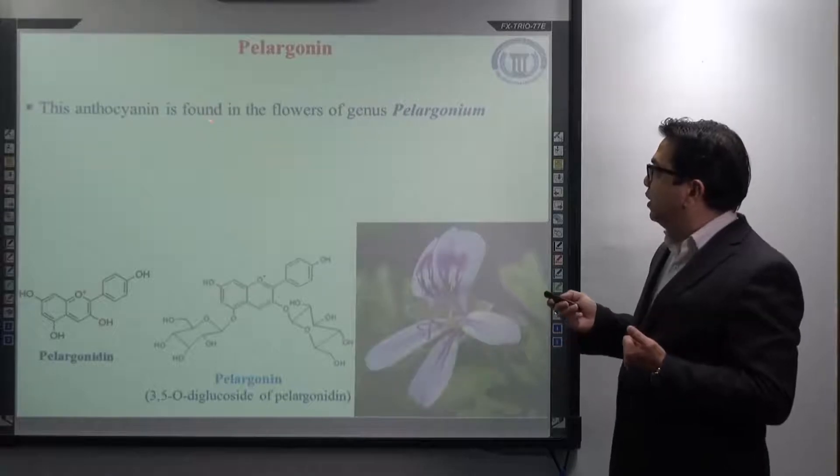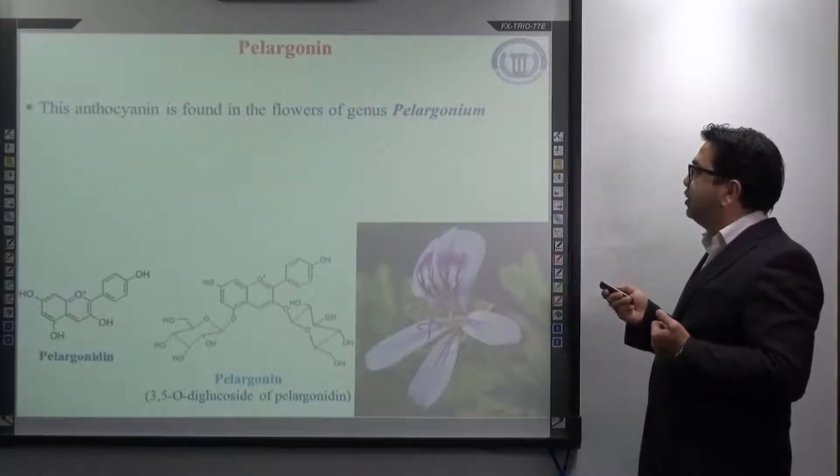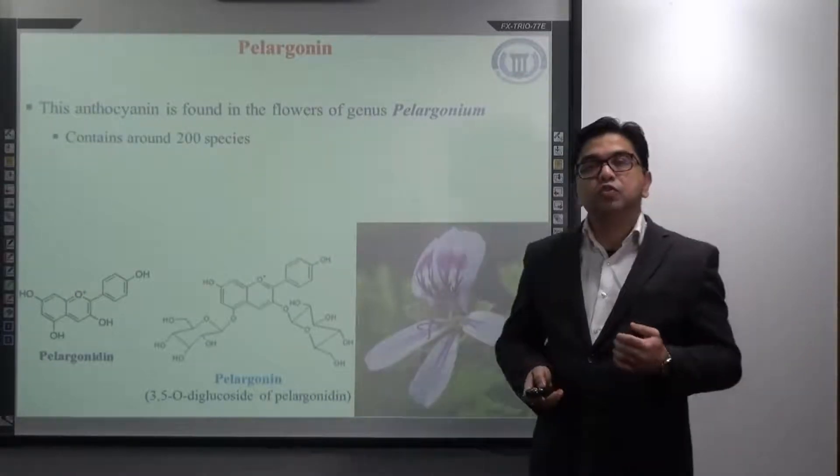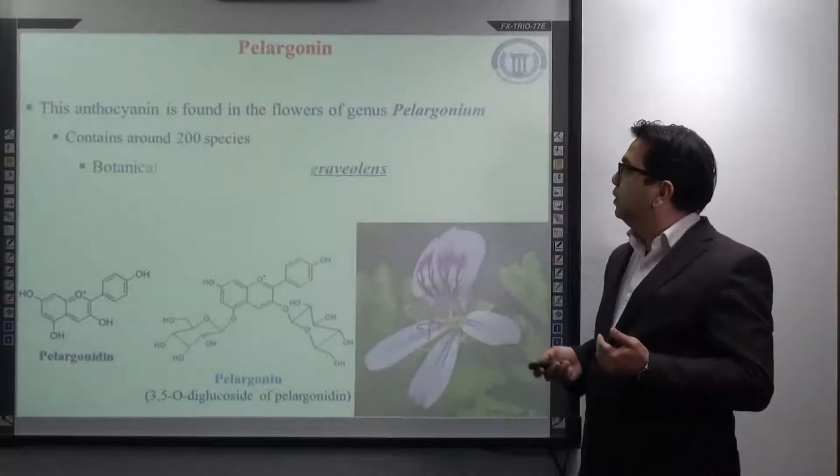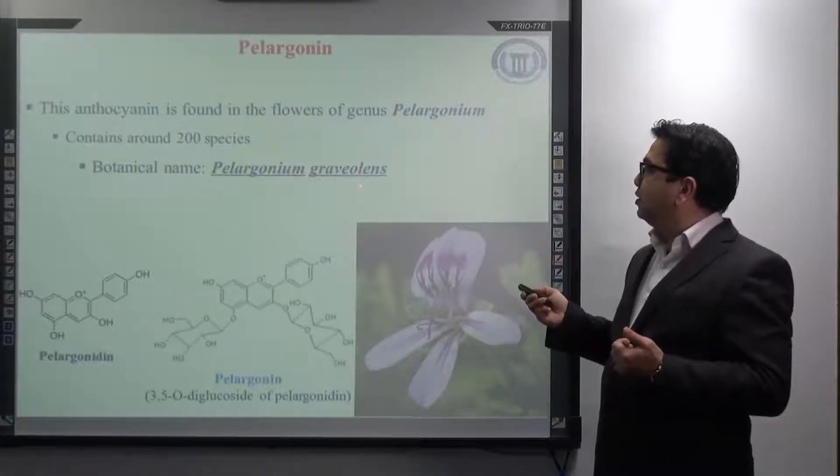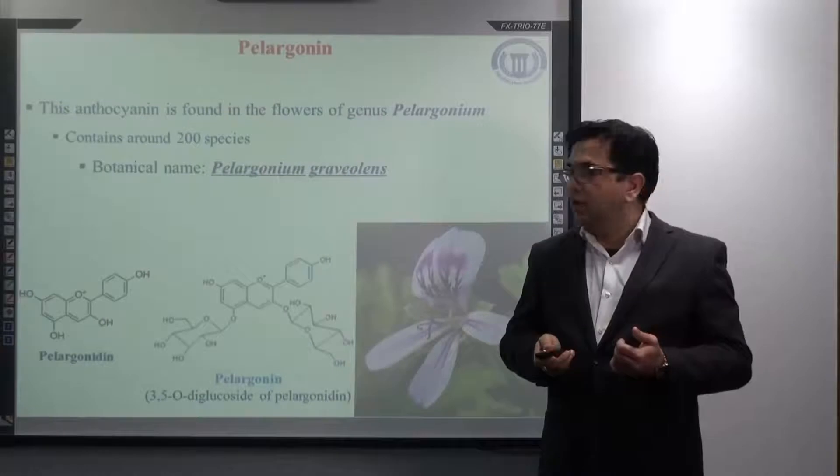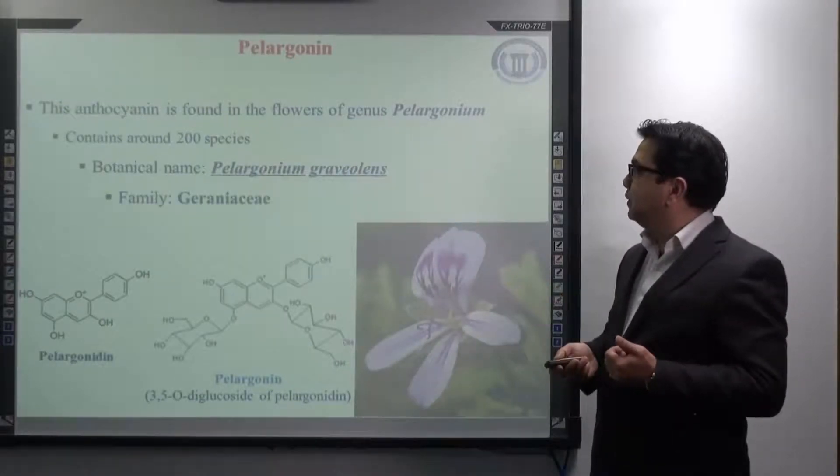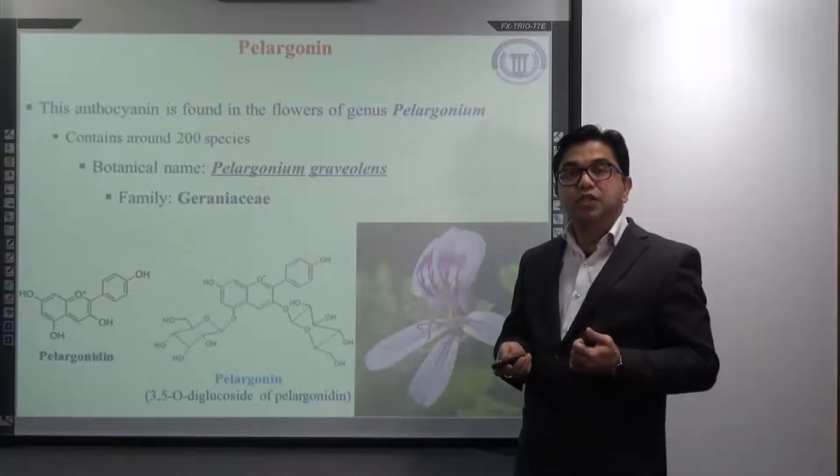This anthocyanin is found in the flowers of genus Pelargonia and it contains around 200 species. The botanical name is Pelargonium graveolens. This is the flower which represents this species and it belongs to the family Geraniaceae.